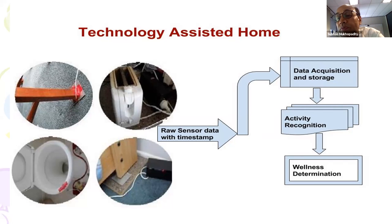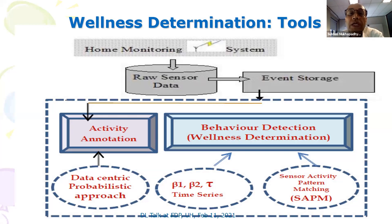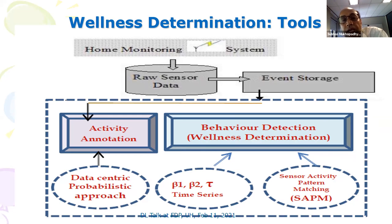You store the data, which will also be used for future analysis. But in real time, you actually analyze to determine what type of activity is happening and then define as how well the person is — the wellness of the person — meaning whether the person is living a healthy life in terms of daily activities. A lot of computational effort is required here, because raw data sometimes doesn't give much information unless we process it. That's why different types of computational tools are very useful.